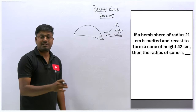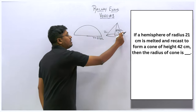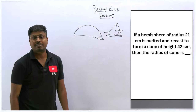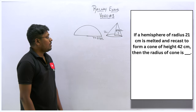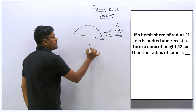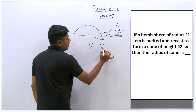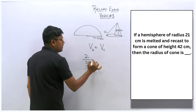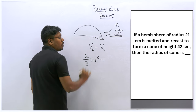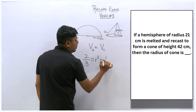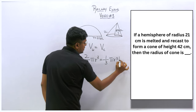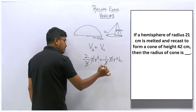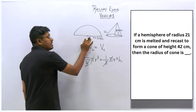Make sure both values are in the same unit before substituting. Since this is a melting concept, volume of hemisphere equals volume of cone. So 2/3 πr³ = 1/3 πr²h. Cancel π and π, cancel 3 and 3, but do not cancel r and r because the two radii are different here.